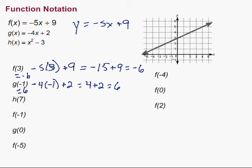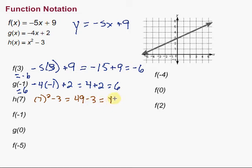Let's try the next one: h of 7. We're talking about the h function, and we're going to put 7 in for x. So we have 7 squared minus 3. 7 squared is 49, and 49 minus 3 gives us 46. So h of 7 is 46.